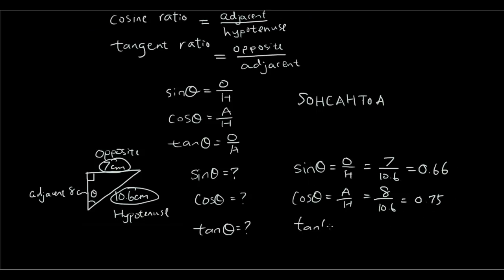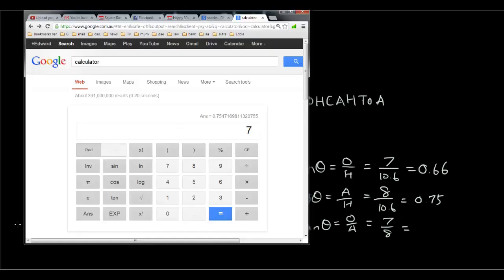And the tangent theta is o over a, so that's 7 over 8. And it's equal to 0.875.